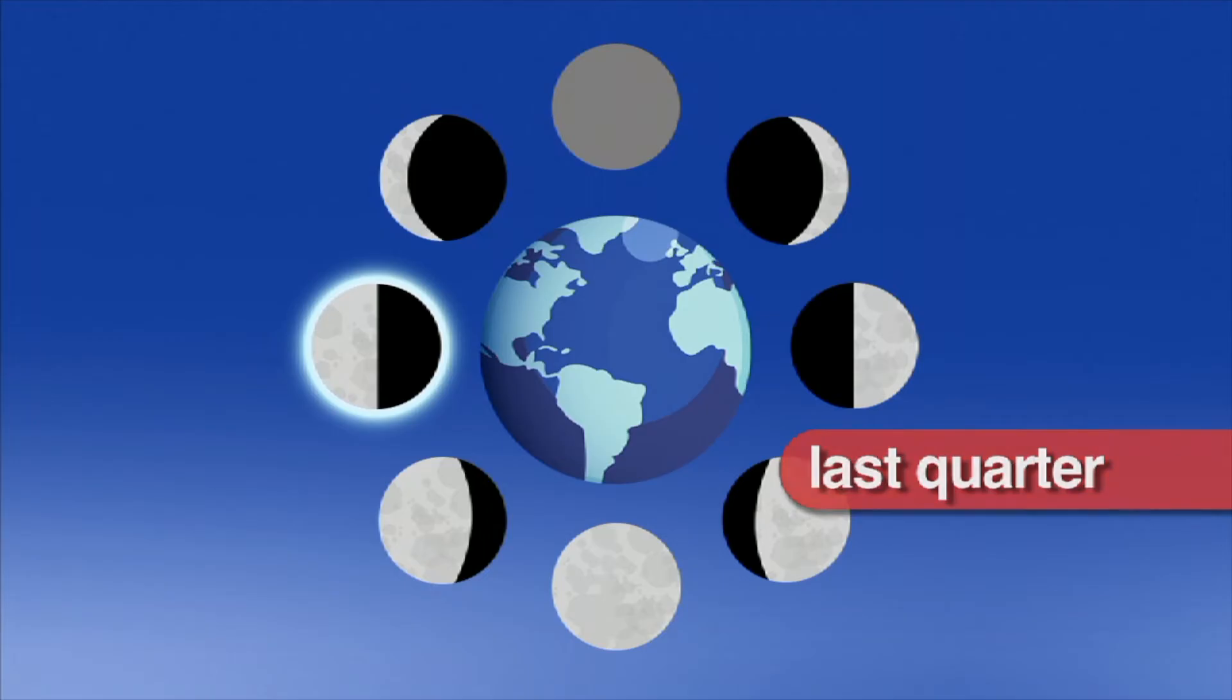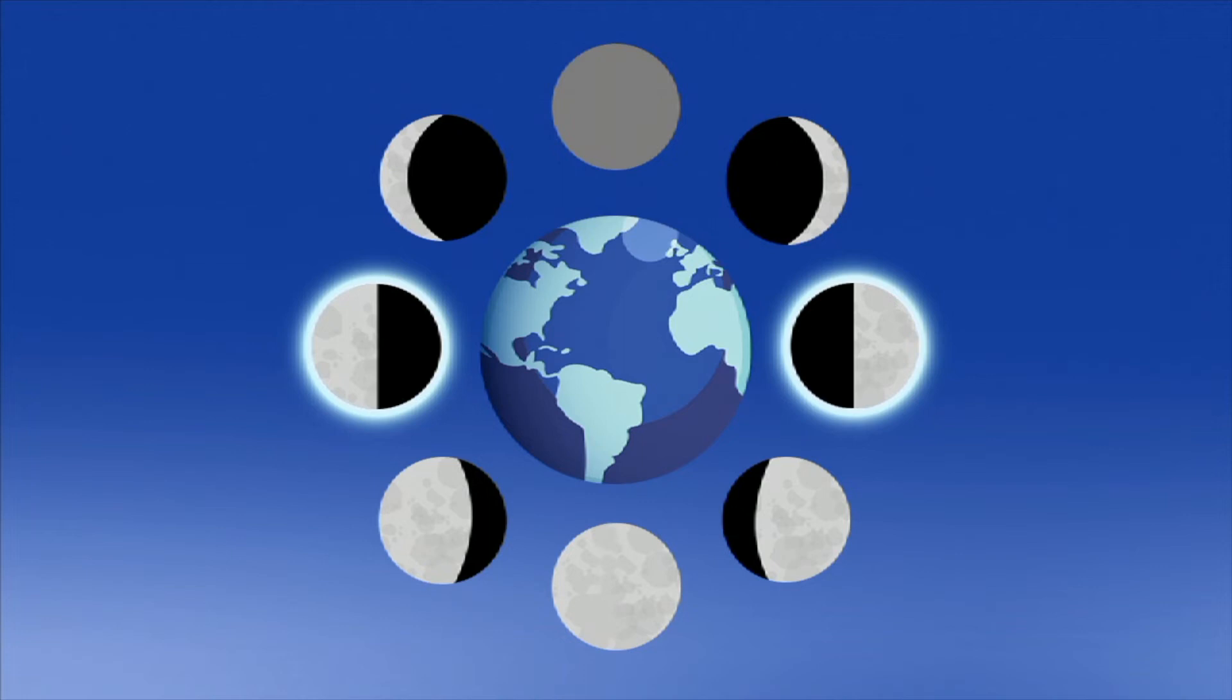This happens when the Moon is three quarters of its way around the Earth and the Moon appears to us as half. The last quarter looks like the first quarter, except it's waning or getting smaller.